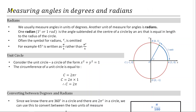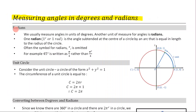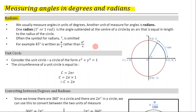We're going to work through these notes, which are all about measuring angles in degrees and radians. Let's begin by discussing what radians are. We usually measure angles in units of degrees, but another unit of measure for angles is radians.